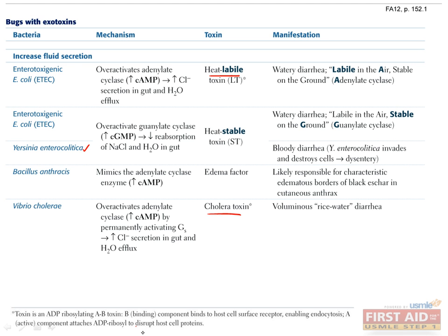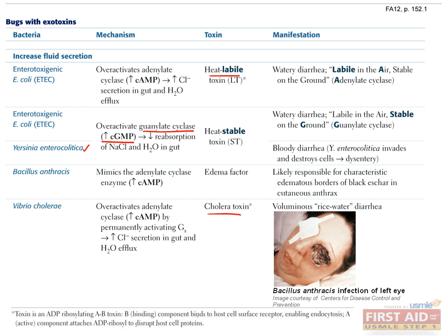Yersinia enterocolitica exotoxin causes bloody diarrhea via invasion and destruction of colon epithelial cells, leading to diarrhea. Yersinia acts by the same mechanism as heat-stable enterotoxigenic E. coli by overactivating guanylate cyclase, which causes an increase in cGMP levels. Bacillus anthracis toxin, also known as edema factor, like pertussis, cholera, and E. coli labile toxin, also acts to increase cAMP levels.